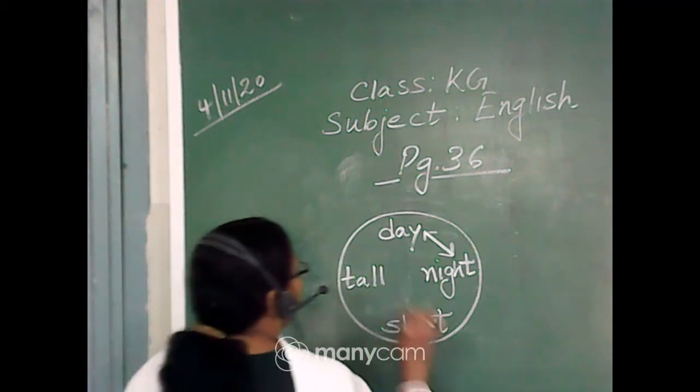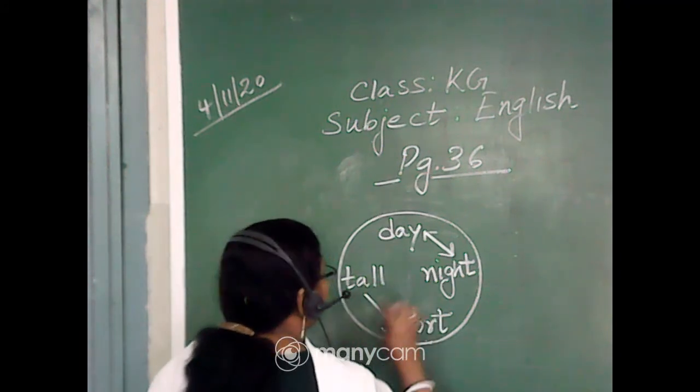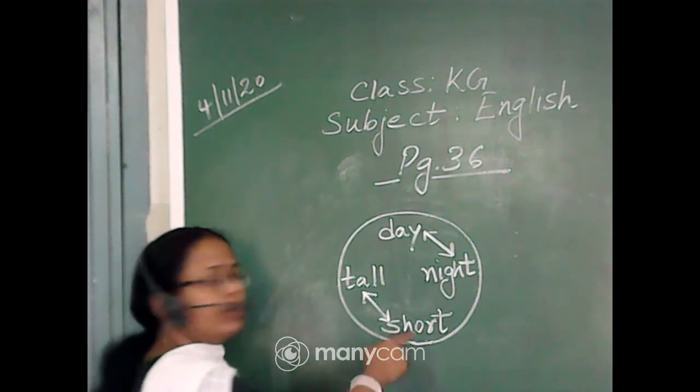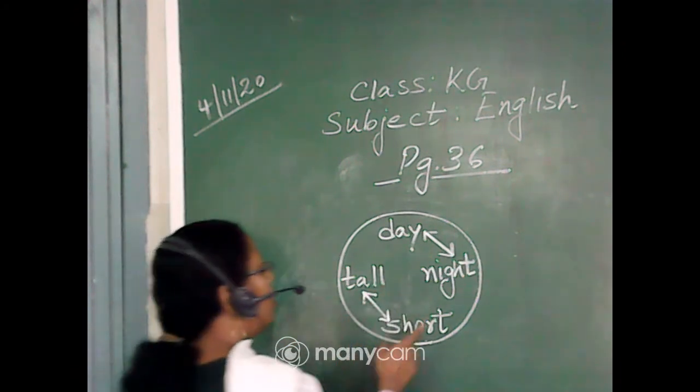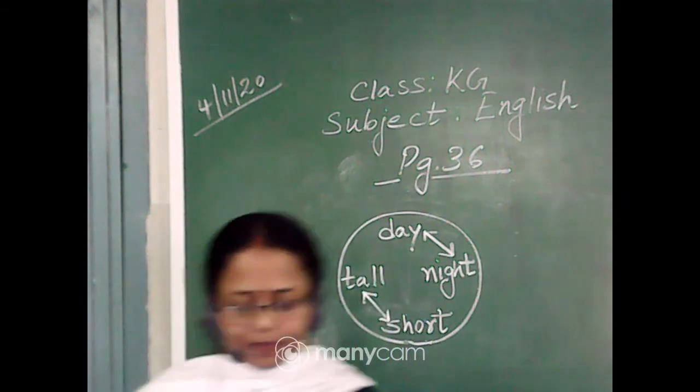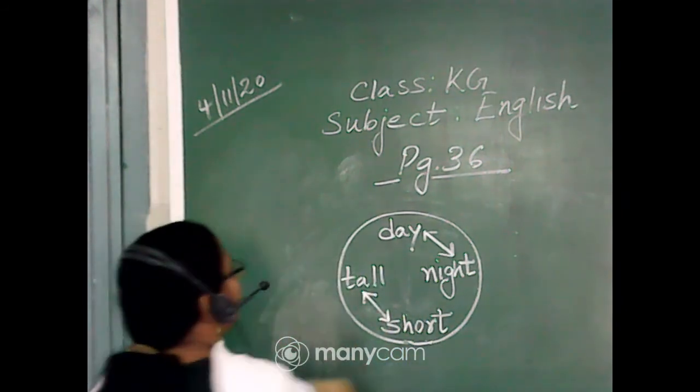Next comes tall, short. Again, we are going to draw one slanting line. So tall, short, short, tall. Okay? Now let us go for the next circle.